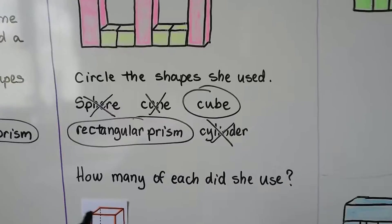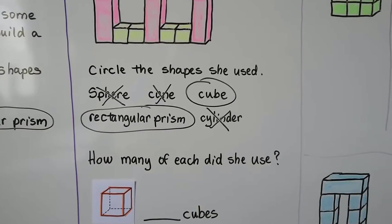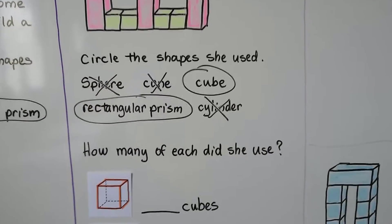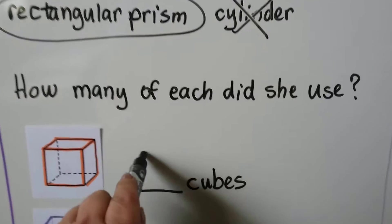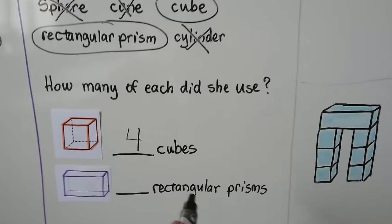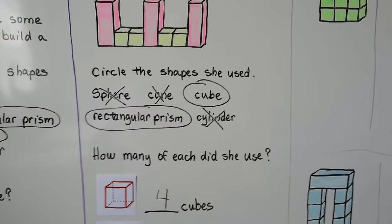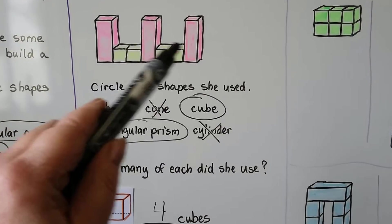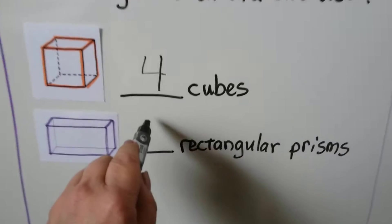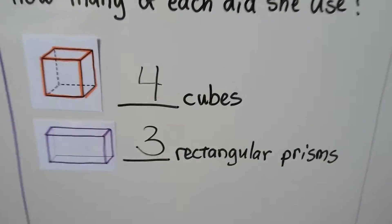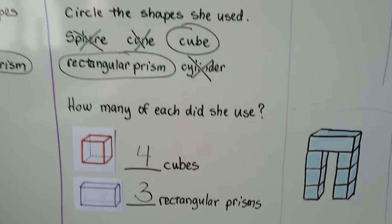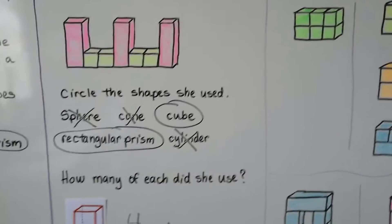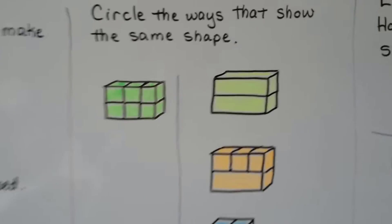How many of each did Tali use? How many cubes? One, two, three, four — she used four cubes. How many rectangular prisms? One, two, three — she used three rectangular prisms. So she used four cubes and three rectangular prisms to make this with her 3D shapes.